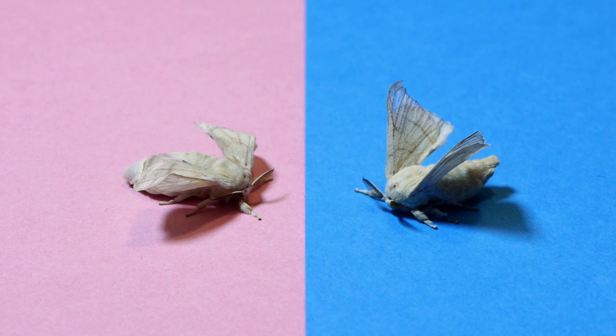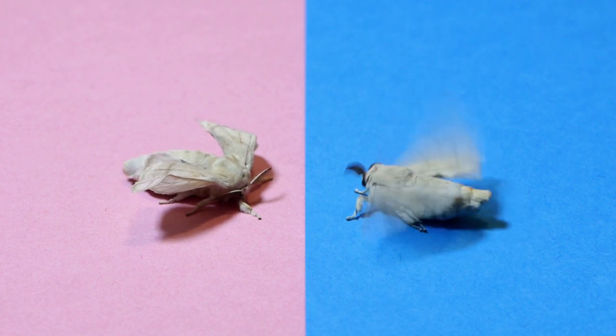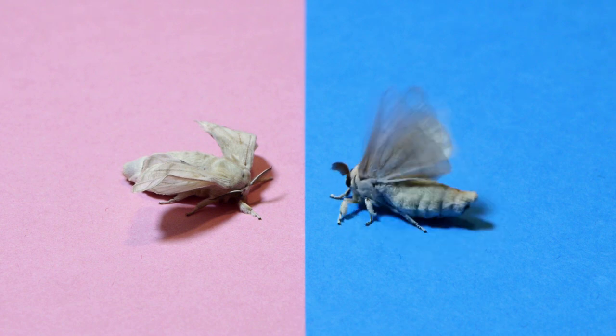When male moths detect the female pheromone, they quickly become excited, flapping their wings, searching for the source of the pheromone.